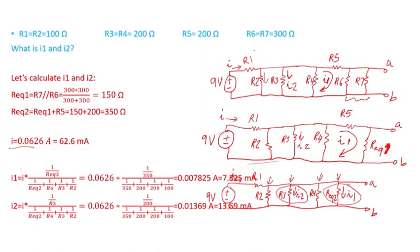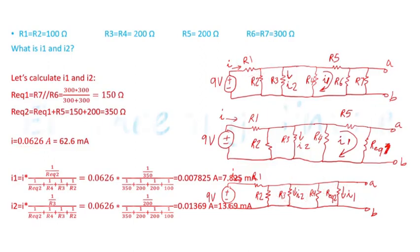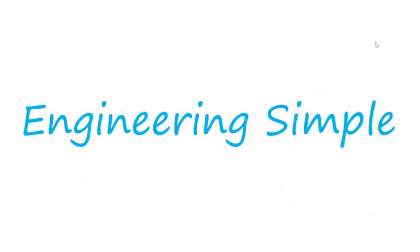Notice I did not involve R1 in current division because it's not in parallel — current I flows through R1 and does not divide. Those are the important things to remember when dealing with current division. Thank you and have a great day.